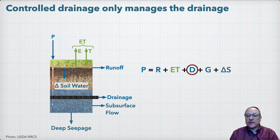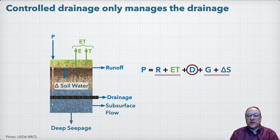Controlled drainage only controls the drainage component of the water balance. As we control the drainage, other components will adjust to maintain that water balance, and those interrelationships will then determine the actual height of the water table.